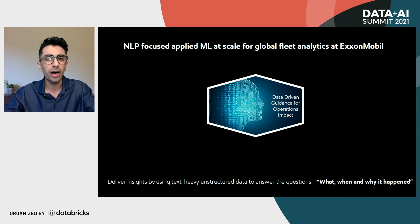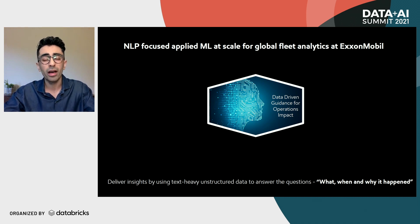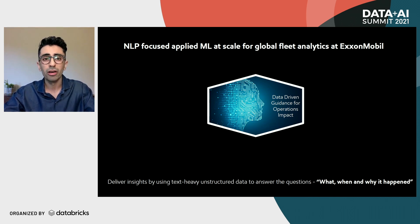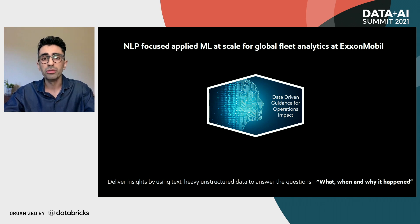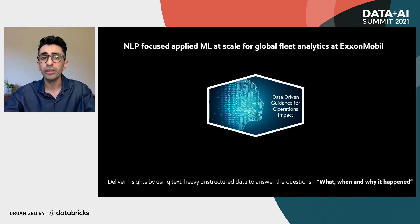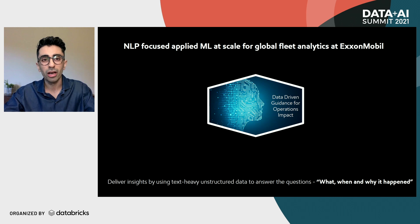So what is this product in a nutshell? This product sifts through text-heavy unstructured data and aims to answer three fundamental questions for us: what happened, why it happened, and when it happened? By the phrase 'it,' I'm referring to an event such as an equipment failure during operations. We want to understand what component failed, what was the underlying reason, and what is the frequency of such a failure.